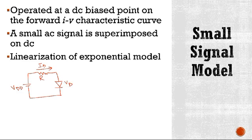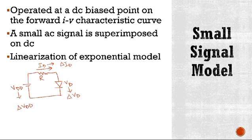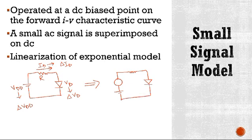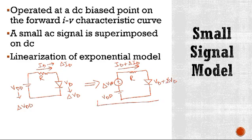The diode voltage is VD. Now consider a situation in which VDD undergoes a small change delta VDD. The diode voltage changes by an increment delta VD, and the diode current changes by an increment delta ID. For this situation, the circuit includes VDD, resistance R, current ID plus delta ID, and voltage VD plus delta VD.